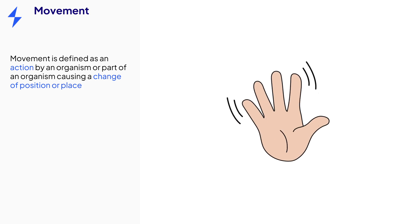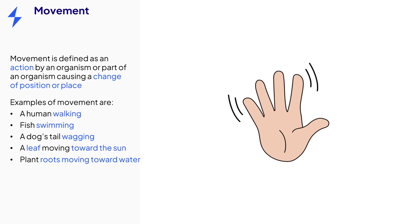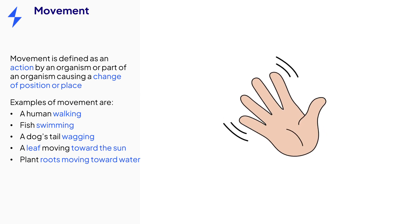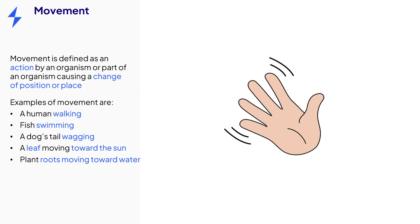Remember that all living organisms move, including plants, bacteria and fungi. Some examples of movement include animals walking or running, or body parts moving like a tail wagging or as you can see here a hand waving.